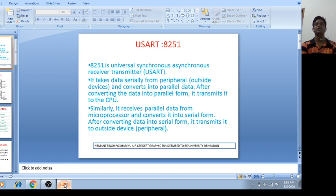This is what it does. 8251 takes data serially from peripheral or outside devices and converts it into parallel data. After converting the parallel data form it transmits it to CPU.